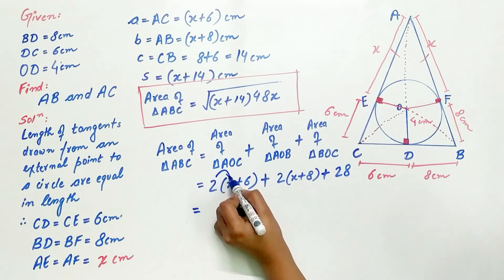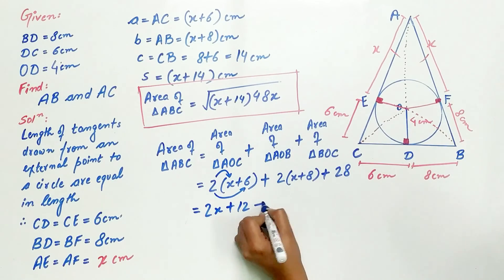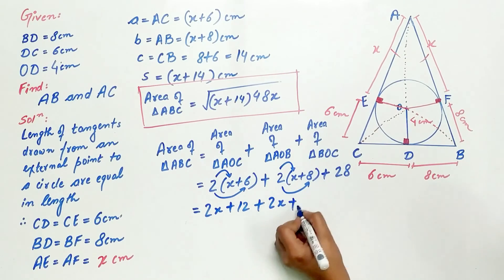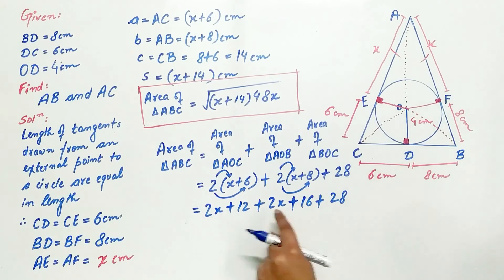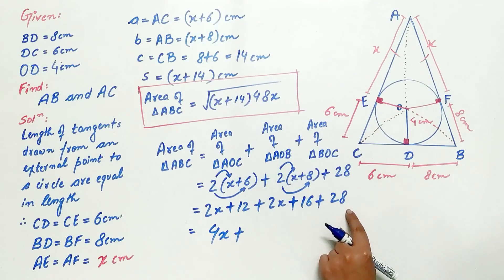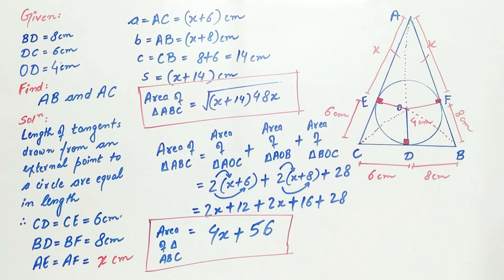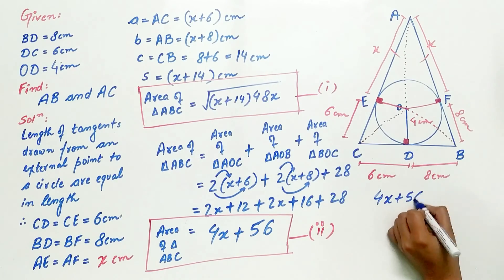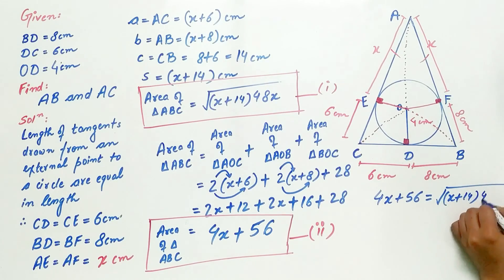Now let's simplify the total area: 2(x+6) + 2(x+8) + 28 = 2x+12 + 2x+16 + 28 = 4x+56. So the total area of triangle ABC equals 4x+56 cm². That was Step 2 result. From Step 2 and Step 3, can we say 4x+56 equals the square root of 48x(x+14)? Yes.